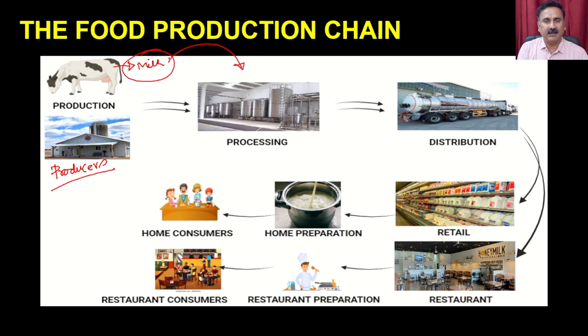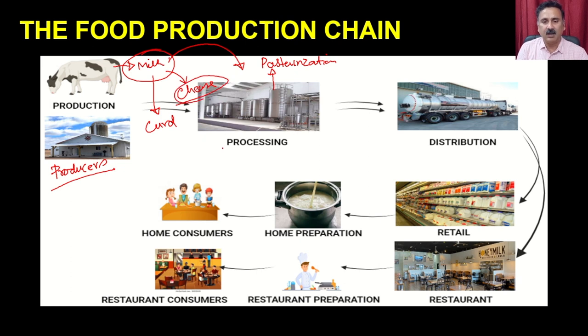Within the processing unit, for example taking milk: it is going to go into pasteurization, or it is going to be converted into curd, or it is going to be used for production of cheese. All of that occurs in this processing unit. In step one you have the producers; in step two you have the processing unit. If you are developing cheese, the process is different than if you want to distribute milk as such through pasteurization, or convert it into curd.